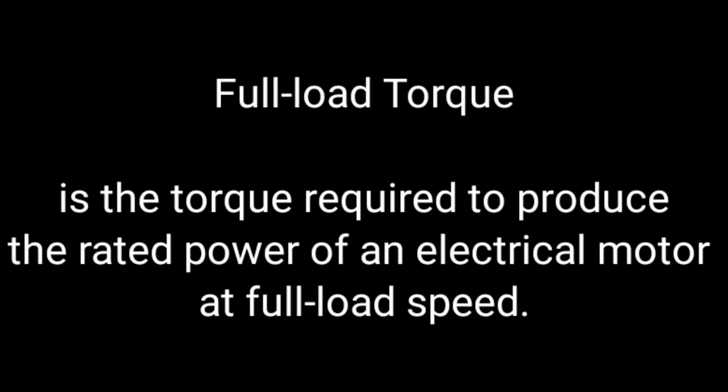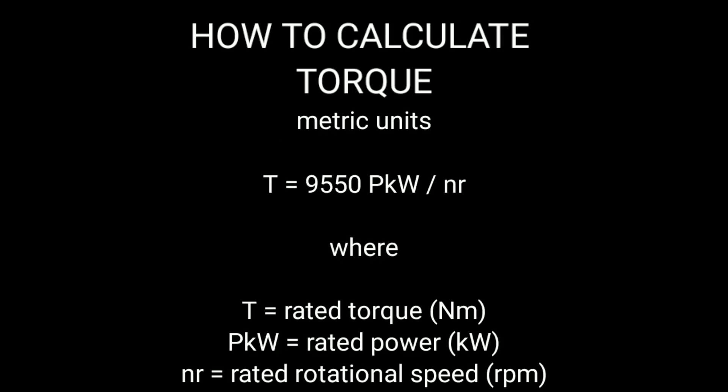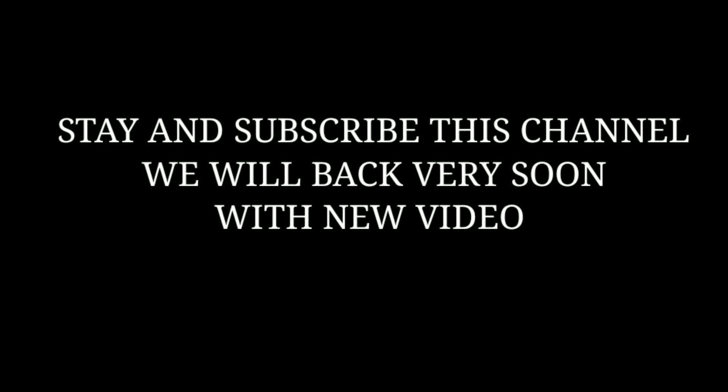Fourth, full-load torque is the torque required to produce the rated power of an electrical motor. To calculate torque in the imperial system: torque equals 5252 times motor HP divided by motor speed. In metric units: torque equals 9550 times motor kilowatts divided by motor speed.